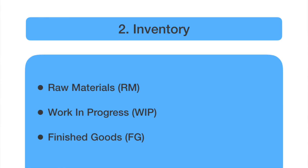The second waste we are going to talk about is inventory. Inventory is classified into three types: raw material stock, work-in-progress (WIP) which is present inside the factory floor, and finished goods stock.